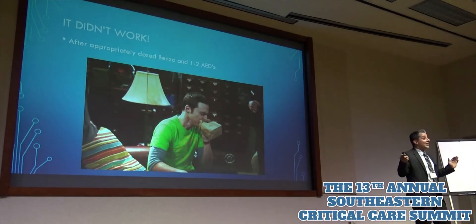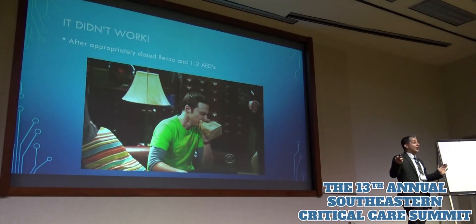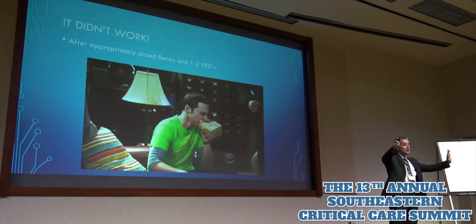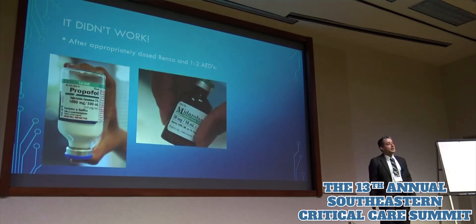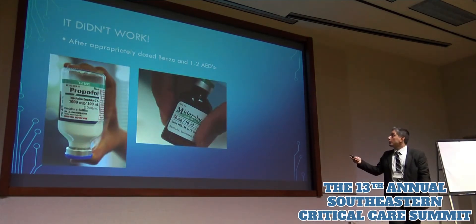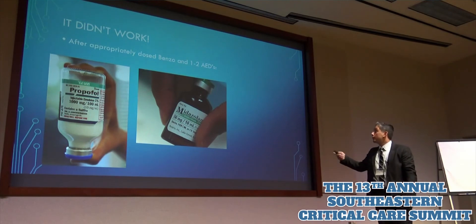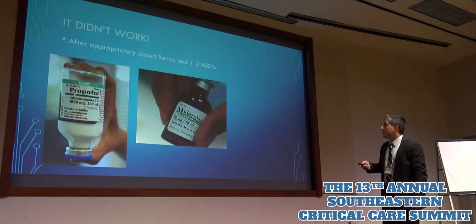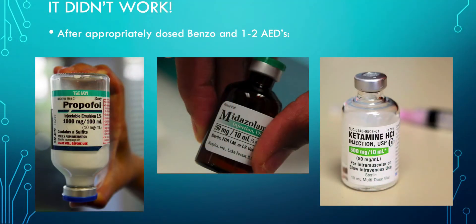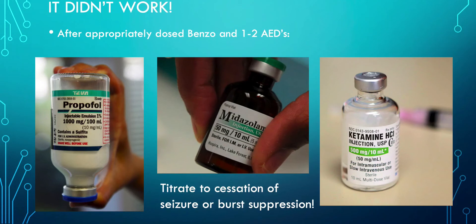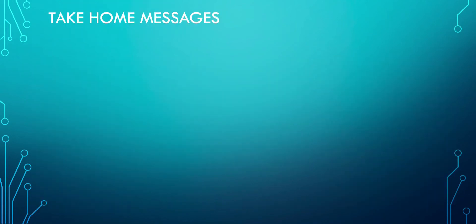Let's say you've done all that and it didn't work. Don't worry — this is where you sedate the patient. It's most commonly done with propofol or Versed, but there's more recent evidence suggesting that ketamine might also be effective. You just titrate it to cessation of seizure or burst suppression.